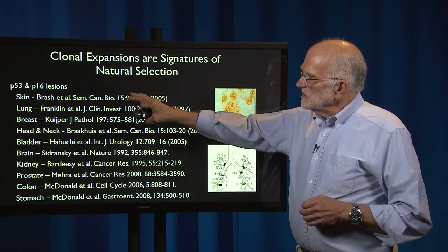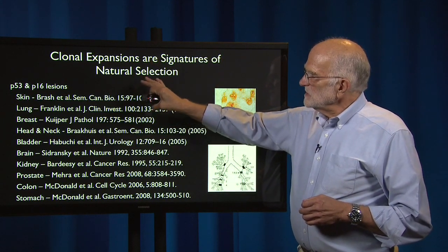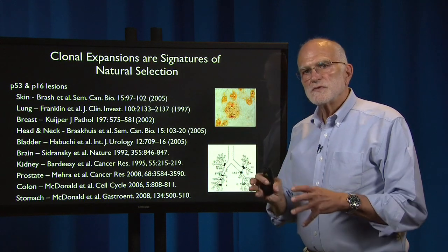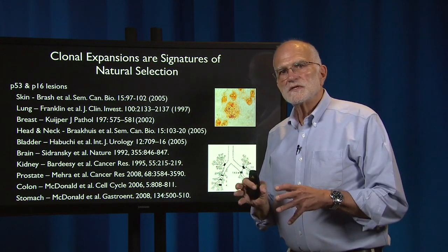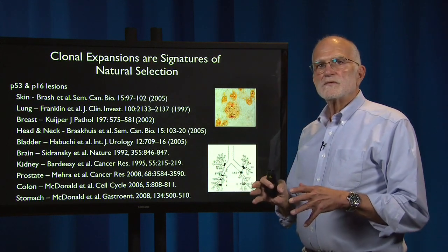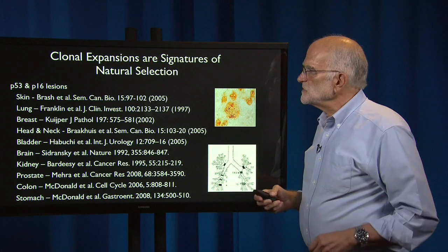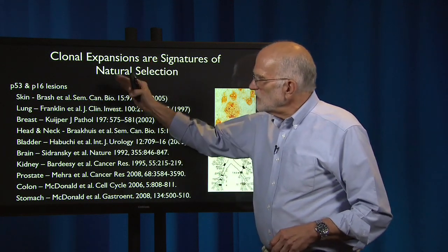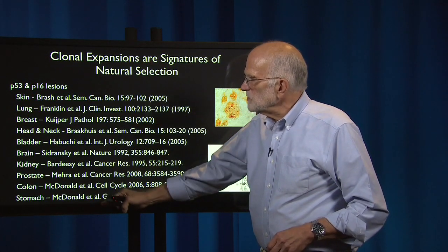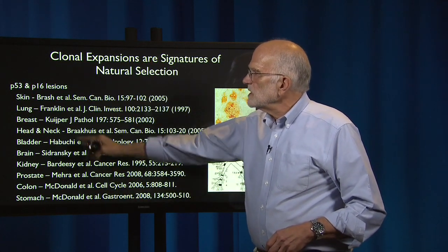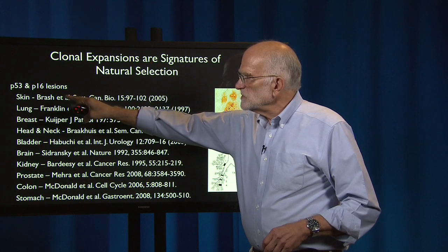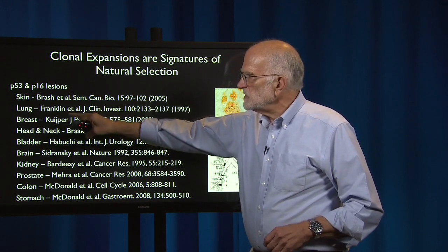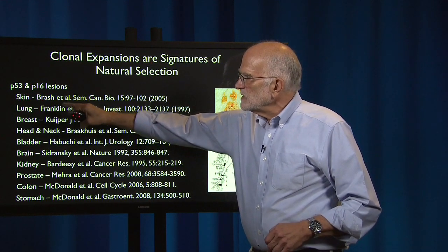Expansions of these clones are signatures that natural selection is favoring clones that have mutations in these genes. There are papers documenting such expansions of P53 and P16 across the same range of cancer types.